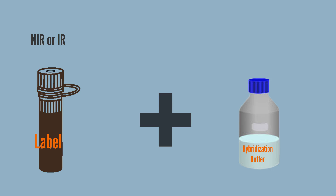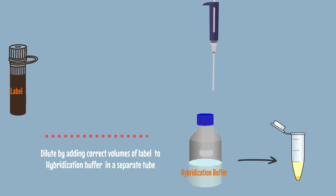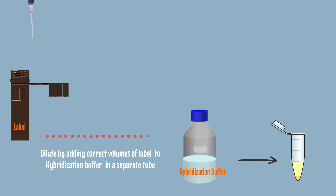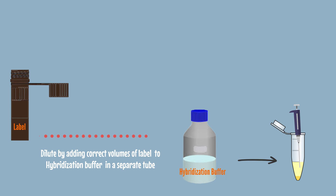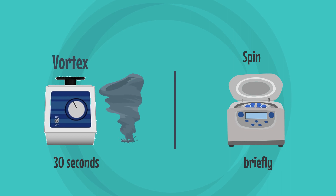Note the location of Stellar Detection preps and reagents. You will need an NIR or IR Label and Hybridization Buffer. Mix by adding correct volumes of label to hybridization buffer in a separate tube. Vortex for 30 seconds and spin briefly.